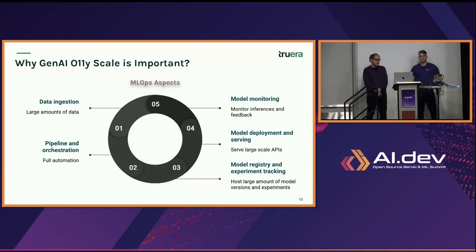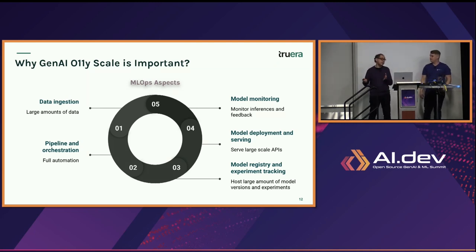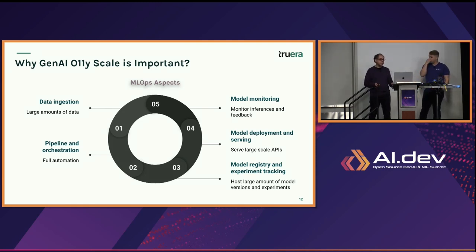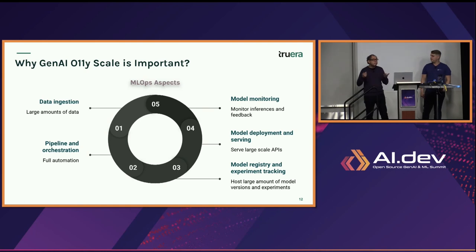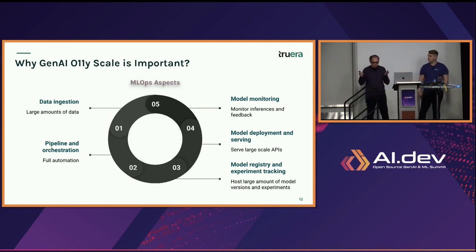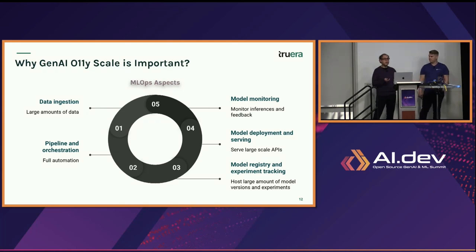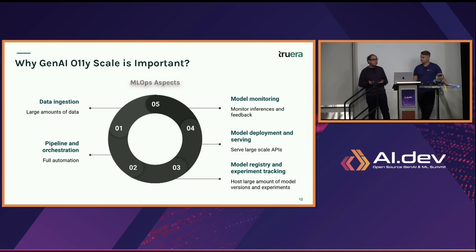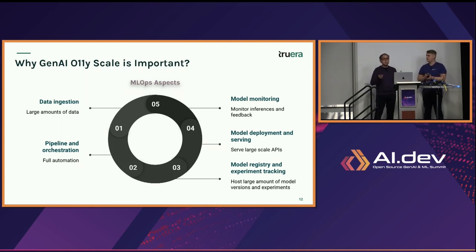So why is scaling observability for machine learning models important? You can look at all the MLOps stages at large scale. Some examples: data ingestion — you're looking at large amounts of data, you need to scale that. Pipeline orchestration and automation needs to be in place for repeatable processes. You want a repository of large language models that supports these large artifacts, a way to serve these models to answer hundreds or thousands of requests in a timely fashion. And finally, you also want monitoring and evaluation at large scale, so your data scientists and different members of your organization can see all the different evaluations of these LLMs.